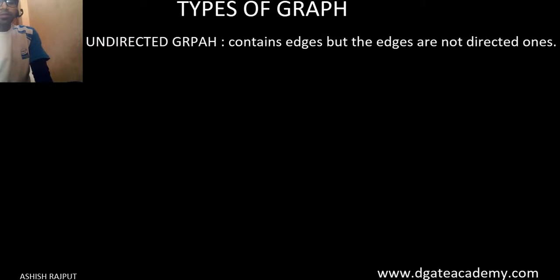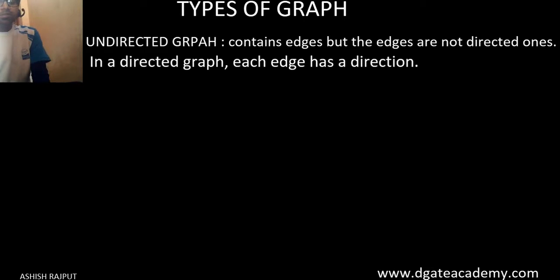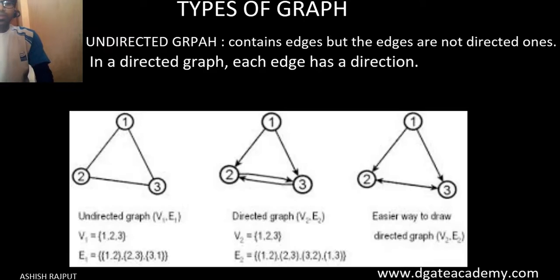There are mainly two types of graph: undirected graph and directed graph. Undirected graph means there is no direction on a given edge. In a directed graph, there is a direction associated with each edge.